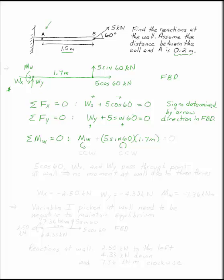This also tends to turn the beam up and all the way around. So this would be counterclockwise. This is counterclockwise. If they're both counterclockwise, they have the same sign. So that would be equal to zero. Note, 5 cos 60, wx and wy pass through the point at the wall, so there's no moment at the wall, at our point right here at the wall, due to those forces.